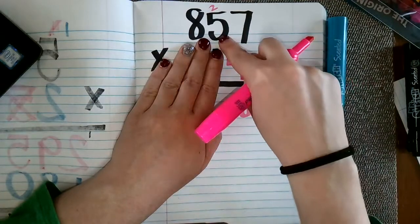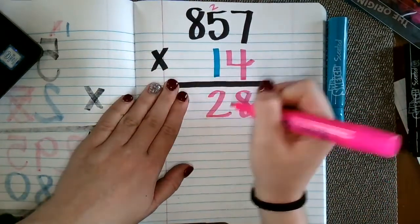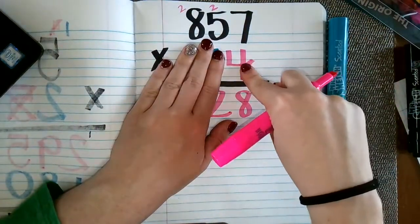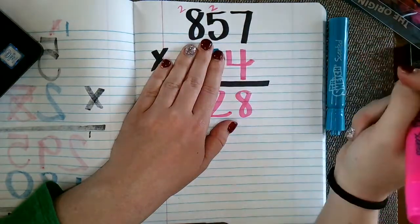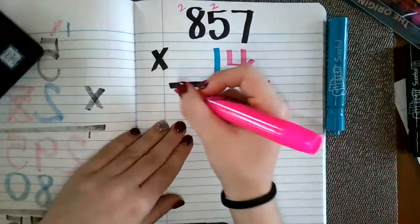So 4 times 5 is 20, plus 2 is 22. Again, bringing that 2 up. 4 times 8 is 32, plus 2 is 34.